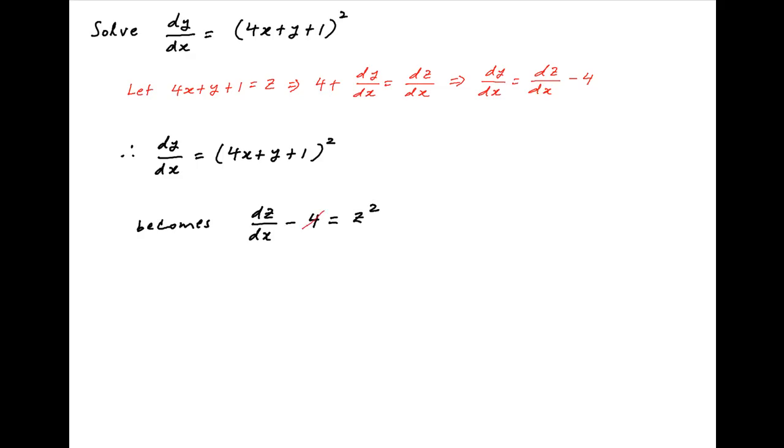Adding 4 to both sides, we get dz upon dx equals z squared plus 4. Now separating the variables, we get dz upon z squared plus 4, or z squared plus 2 squared, is equal to dx.